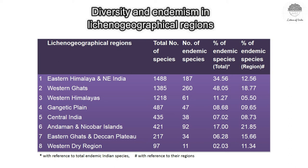In this table, the Eastern Himalaya and Northeast India region with 1488 species has the maximum diversity, followed by Western Ghats with 1385 species, and then the Western Himalayan region with 1218 species. These regions can be considered lichen diversity hotspots. The maximum endemism is seen in the Western Ghats at 48.05 percent, followed by the Eastern Himalayan region at 34.56 percent.